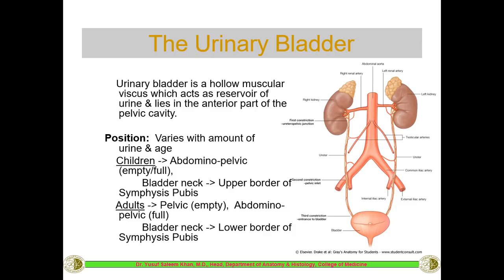Looking at the bladder diagram, we can see the two kidneys where urine is formed, which passes through the two ureters draining into the urinary bladder. The neck of the bladder is at the inferior end. The position of this neck differs depending on age. In children it will be at the upper border of the pubic symphysis, while in adults it will be at the lower border of the pubic symphysis.